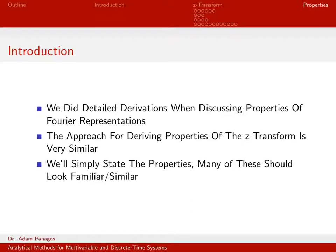Let's take a look at some properties of the Z-transform. This discussion is very similar to all the other transform properties we've looked at, both in previous classes and in this class. We want to know how things in the Z-domain change as things in the time domain change, and vice versa. A lot of these properties we did a very detailed derivation of when we talked about Fourier transforms. So because of that, we're not going to go through that again — it's really very much the same steps, just with slightly different notation. So a lot of these properties we're just going to state them, and they should look very familiar.